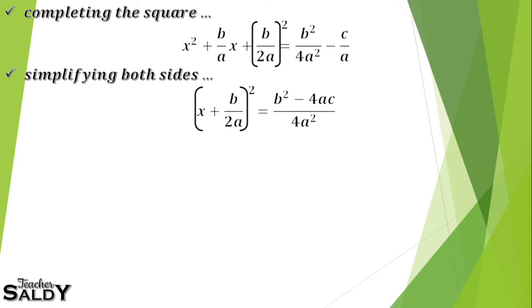Now we simplify both sides. We get (x + b/2a)² = (b² - 4ac) / 4a². On the right side, we find the LCM which is 4a². We copy b² since its denominator matches the LCM, then divide 4a² by a to get 4a, multiplied by c, giving us -4ac.